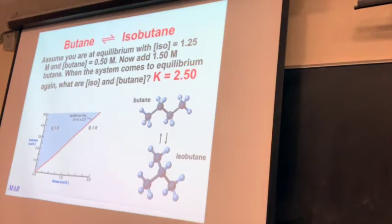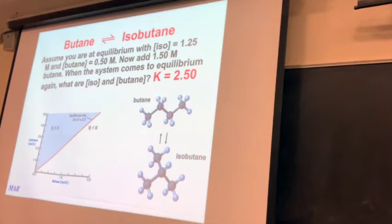This problem is a little different because we're going to disturb the equilibrium. What that means is we're going to add in a lot of reactant, the butane. So instead of having only 0.50 mL of butane, now you have a total of 2.00 mL of butane. The question is: what are the new equilibrium concentrations? If you add a lot of reactant, how do you expect the equilibrium to adjust — more products, more reactants, or no change?